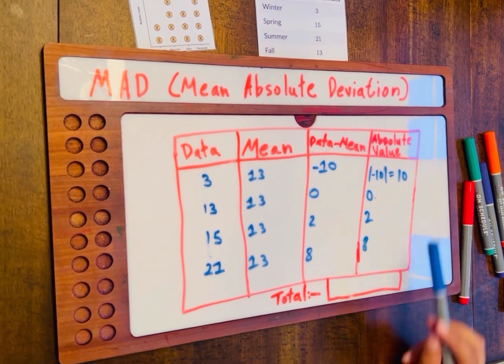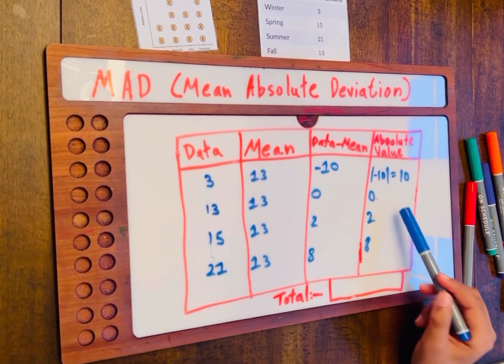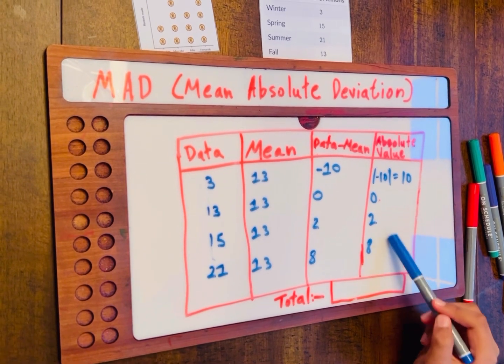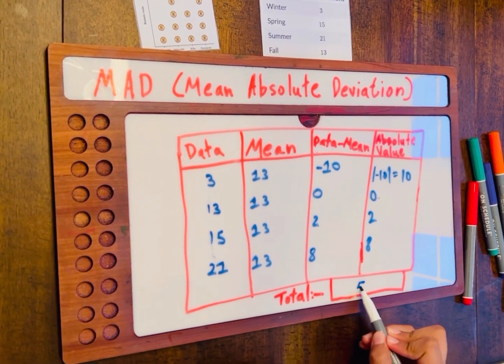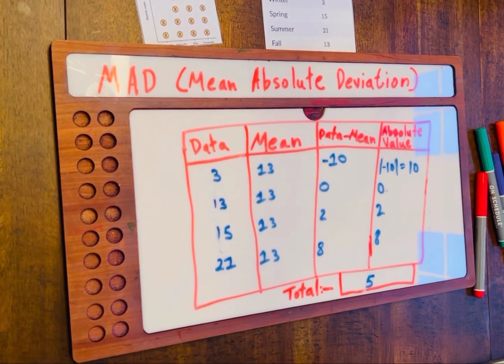Now, we have to find the mean of it. 10 plus 0, 10. 10 plus 2, 12. 12 plus 8, 20. 20 divided by 4 is equal to 5. So, the total is 5. Here, the MAD is equal to 5.